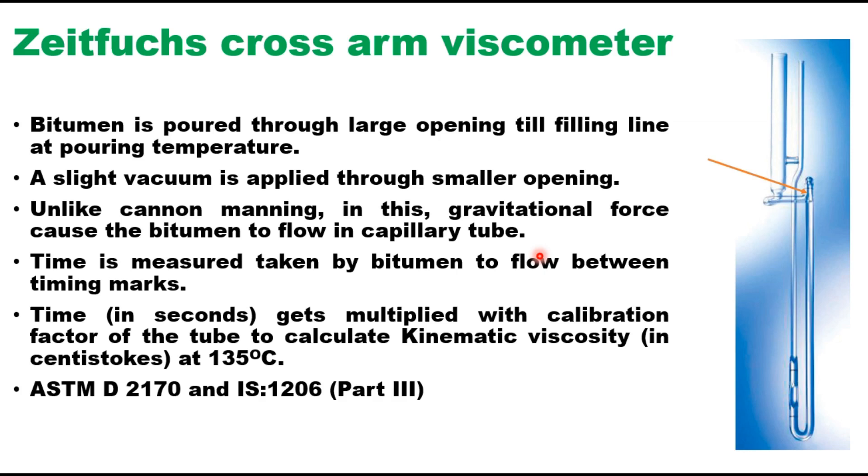A stopwatch is used to measure the time in seconds required for the bitumen to flow between two timing marks and these are two marks here in the tube. This time is multiplied with the calibration factor of the tube to get the kinematic viscosity at 135 degree centigrade and this tube viscometer is also recommended in ASTM D2170 and also in IS1206.